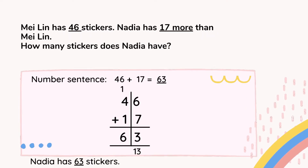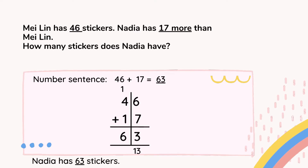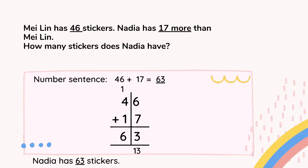That's it — we already have the full answer: 63. I transfer the number 63 into the simple sentence: Nadia has 63 stickers. Don't forget to write the answer 63 in the number sentence. This means Nadia has 63 stickers, and Mailin has 46 stickers. Nadia has 63 stickers, which is 17 more than Mailin.